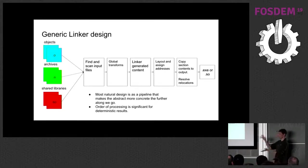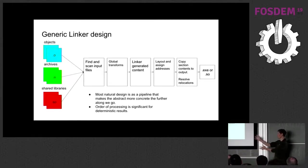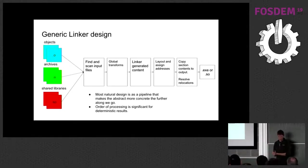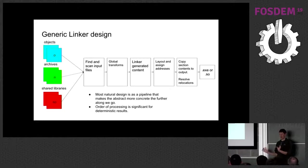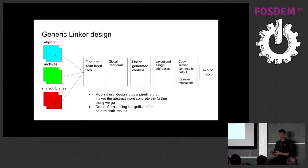To start with, the linker is mostly just sucking things in. In general, things get less symbolic and more concrete the further to the right you go in the pipeline. One thing to highlight is that the order of processing is significant — if you put one file before another in the link line, you'll get a different binary out if you swap those files around on your command line. That ordering difference can limit some things you might be able to do in parallel.